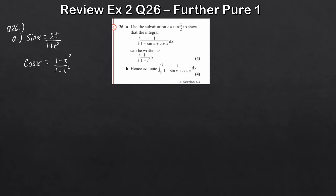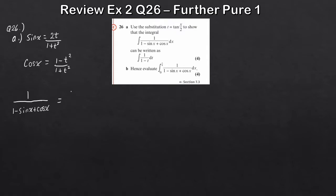And cos x is (1 - t²) over (1 + t²). So that's sin x and cos x. Now let's use those t-substitutions and change the integral. We can write 1 over (1 - sin x + cos x) and substitute in: sin x becomes 2t/(1 + t²) and cos x becomes (1 - t²)/(1 + t²).